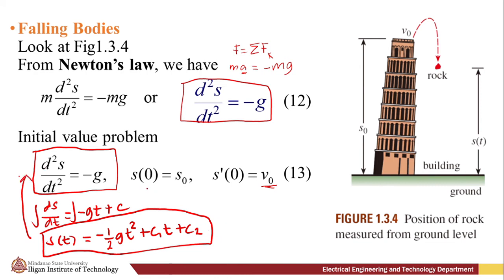Now we can apply this initial condition. Applying the first condition, at time t = 0, our s is just equal to s₀. Then we have -½g(0) + c₁(0) + c₂. These will be cancelled. So our c₂ is just equal to s₀.